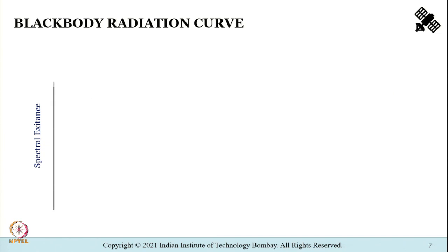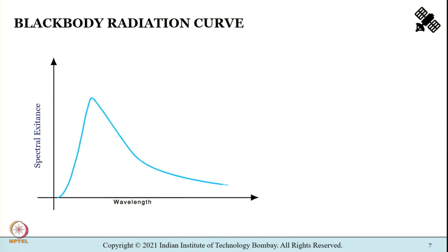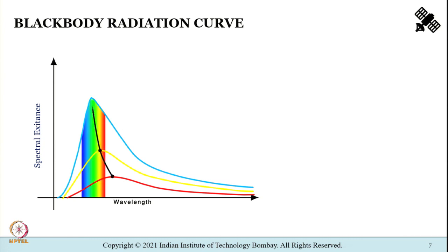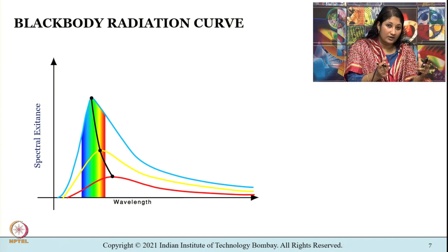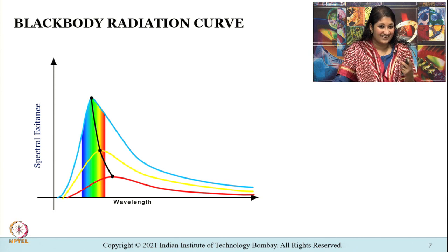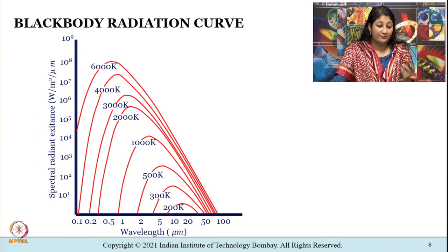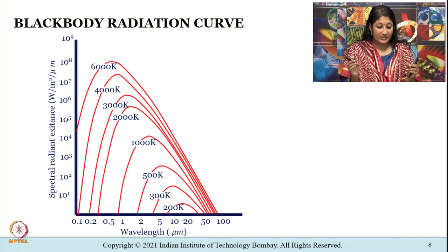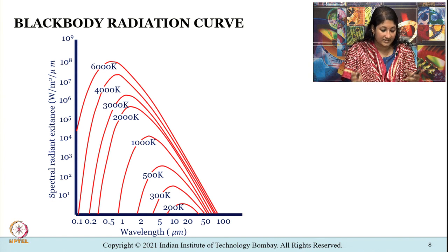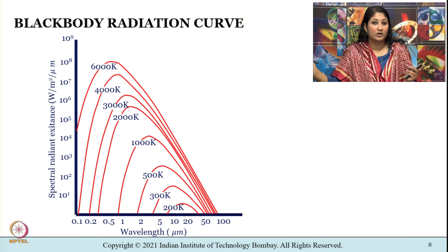The spectral exitance can be plotted with respect to different wavelengths. The spectral exitance curves for black bodies at different temperatures are shown here. On the x-axis, wavelengths in micrometers are given — 0.1, 0.2, 0.5 and so on up to 100 micrometers — and on the y-axis, spectral radiant exitance is shown. For lower temperatures the curves peak at longer wavelengths.